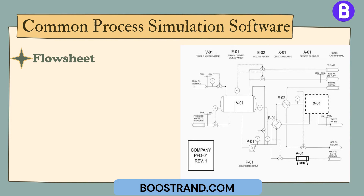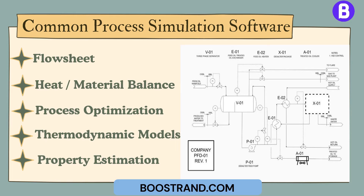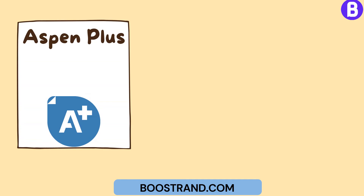Through a robust set of features and capabilities for both the design and optimization of steady-state processes, particularly those that involve complex reactions and separations, efficient simulation software offers an extensive library of thermodynamic models and property estimation methods, which are essential for accurate process modeling. Some of the most widely used modeling software tools include Aspen Plus, mostly used for chemical industries.